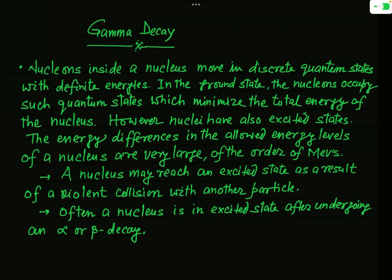In nuclear decay, we have discussed in detail the two decay processes: alpha decay and beta decay. Now, finally, in this nuclear decay chapter, we are going to discuss the third and last radioactive decay process, which is called gamma decay.